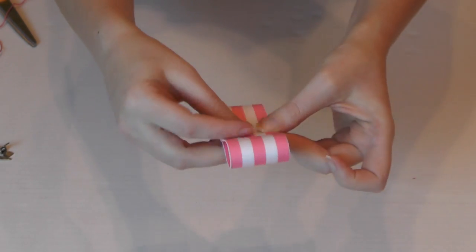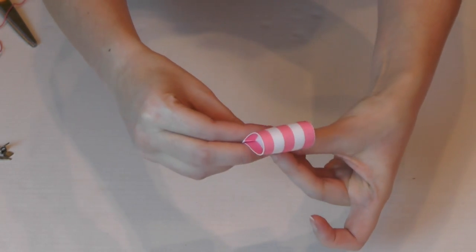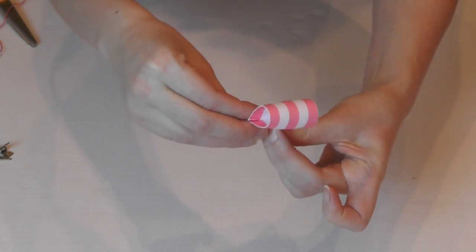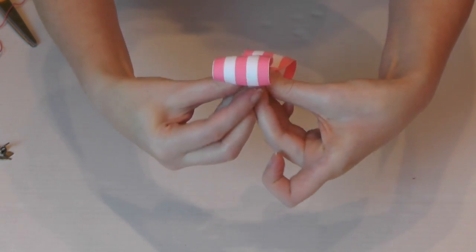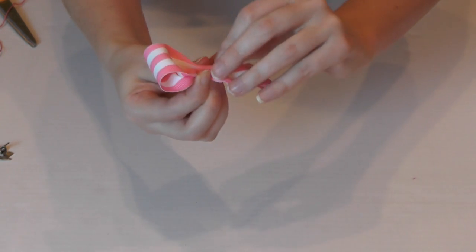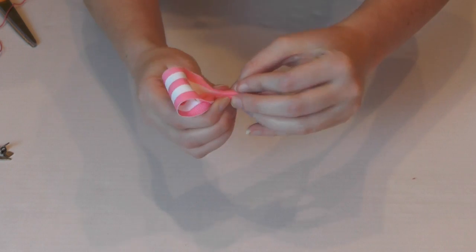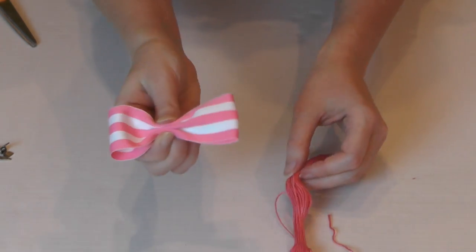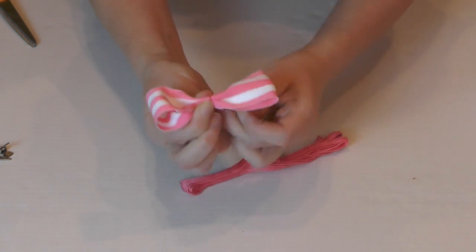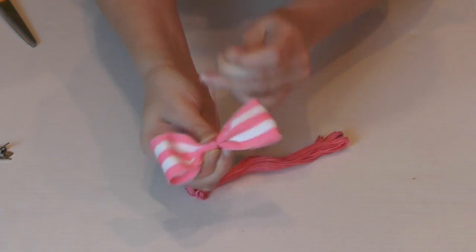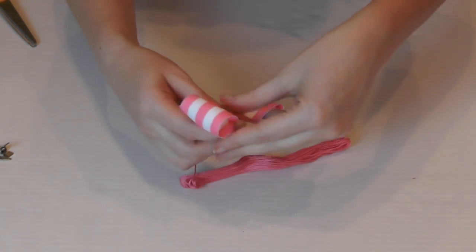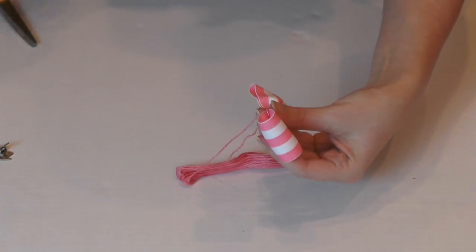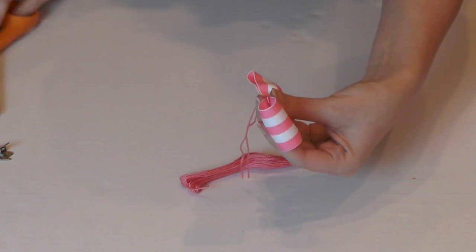Now all you have to do is give it a crease, I like to do it three times, one, two, three. And then you're going to take your embroidery floss and wrap it around. Tie it off, and then you have your bow.